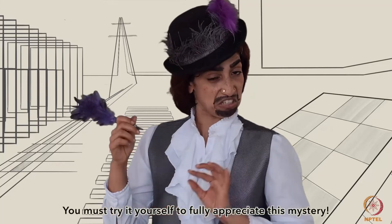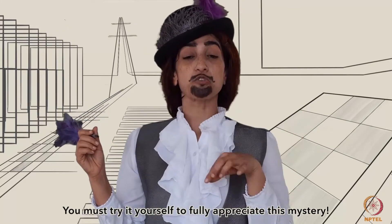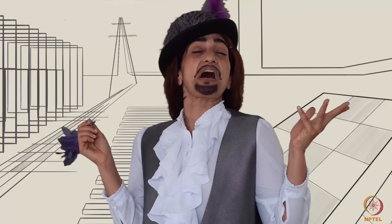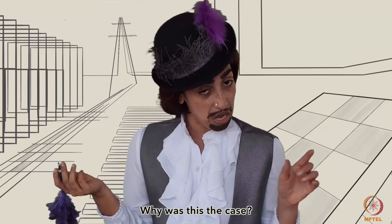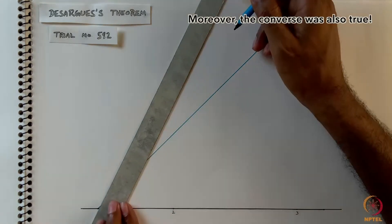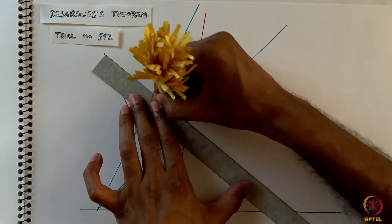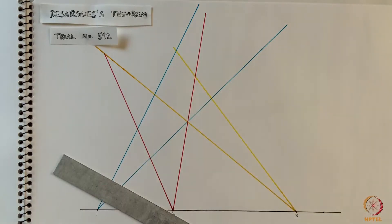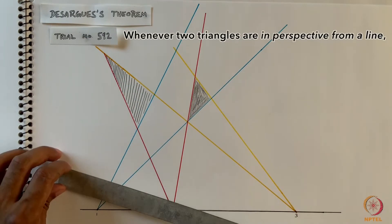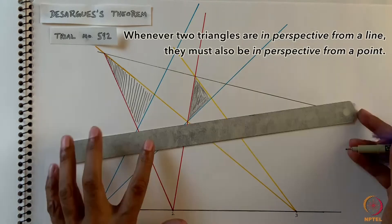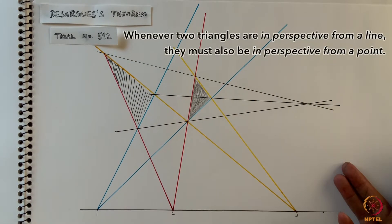You must try it yourself to fully appreciate this mystery. Pourquoi? Why was this the case? Moreover, the converse was also true. Whenever two triangles are in perspective from a line, they must be also in perspective from a point.